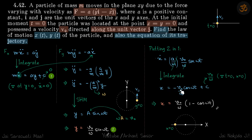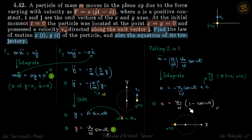Integrating, we get x = -v₀·cos(ωt)/ω + C. Applying the boundary condition x=0 at t=0 gives C = v₀/ω. So x = (v₀/ω)·(1 - cos(ωt)).